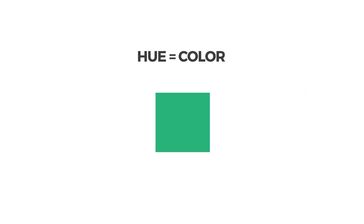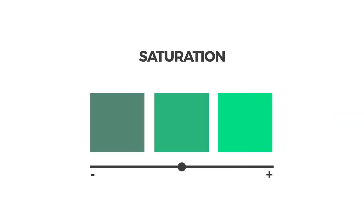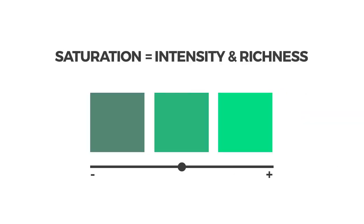Color theory provides three main ways of describing color: hue, saturation, and value. Hue is the particular color in question — let's say green, for example. Saturation is the intensity and richness of a color. The higher the saturation, the more intense the color. The lower the saturation, the more pale and washed out it appears.